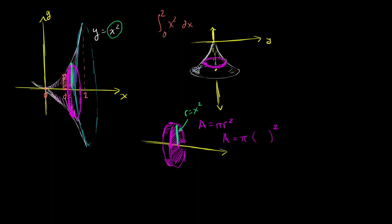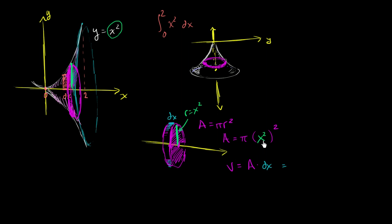In this case f of x is x squared, so our radius is equal to x squared. The area of the face for a particular x is going to be equal to pi times f(x) squared. Since f(x) is x squared, that's pi times x squared squared. Our volume is going to be our area times the depth, times dx. So the volume of this coin is going to be equal to pi times x squared squared times dx, which is equal to pi times x to the fourth dx.